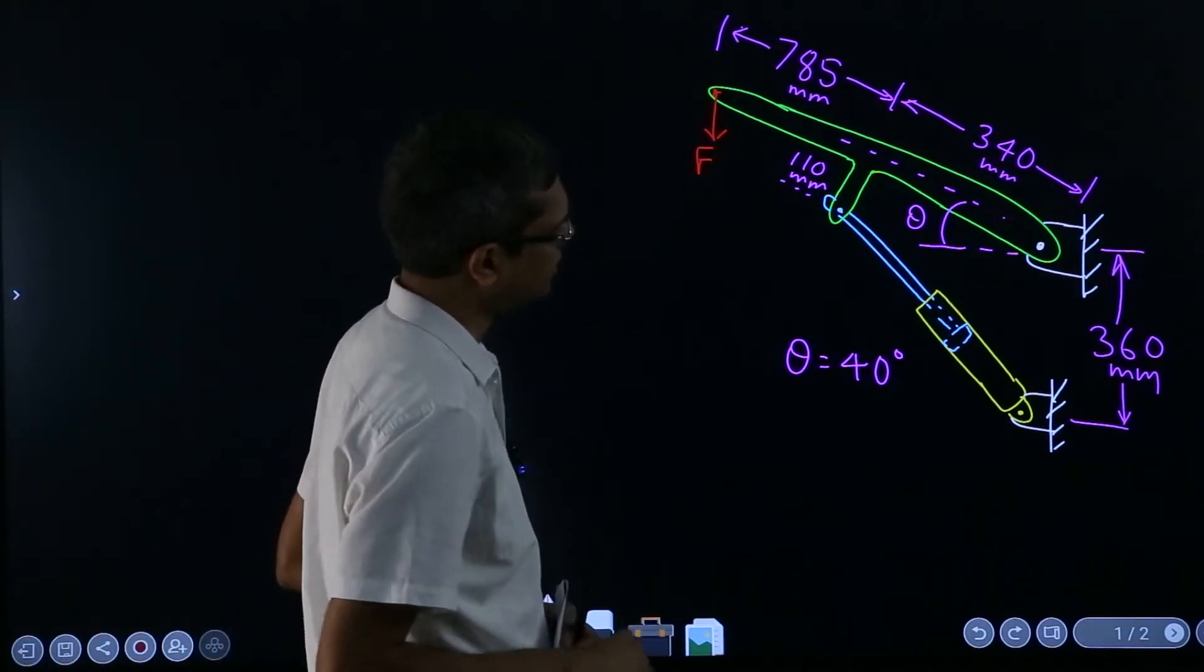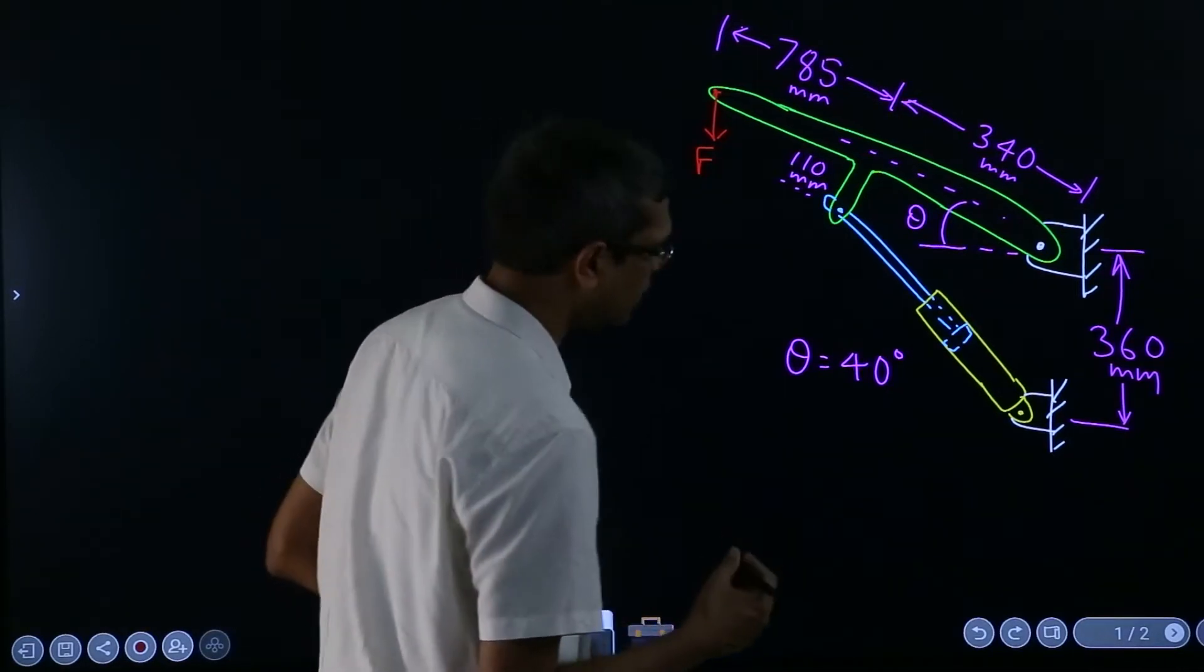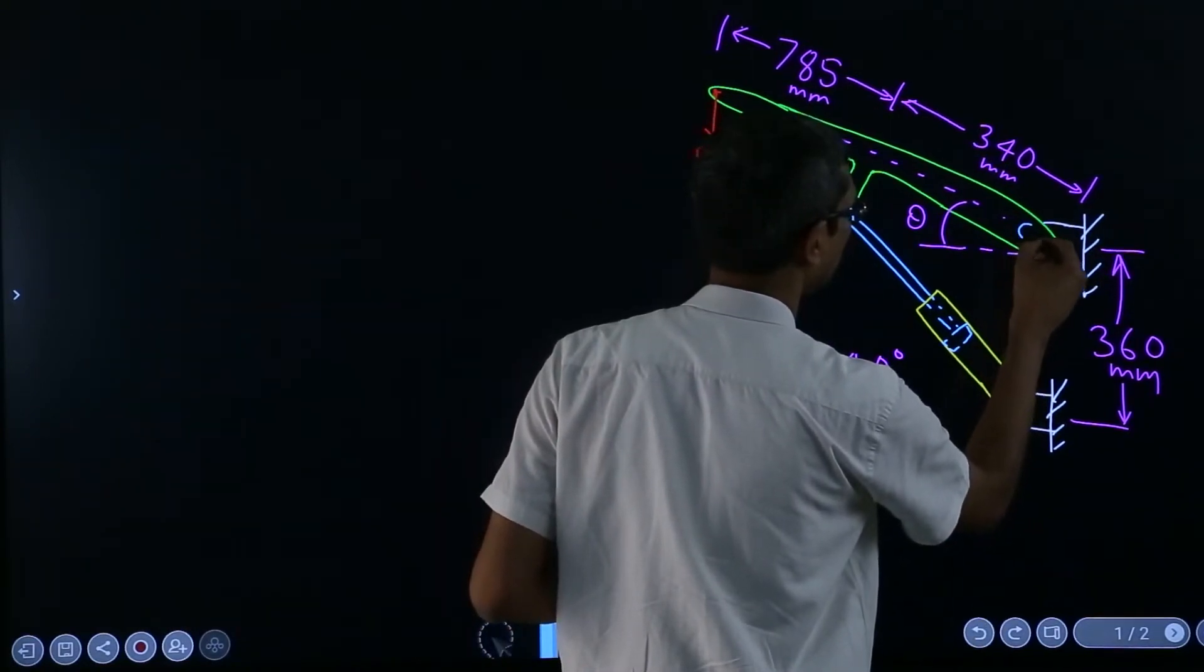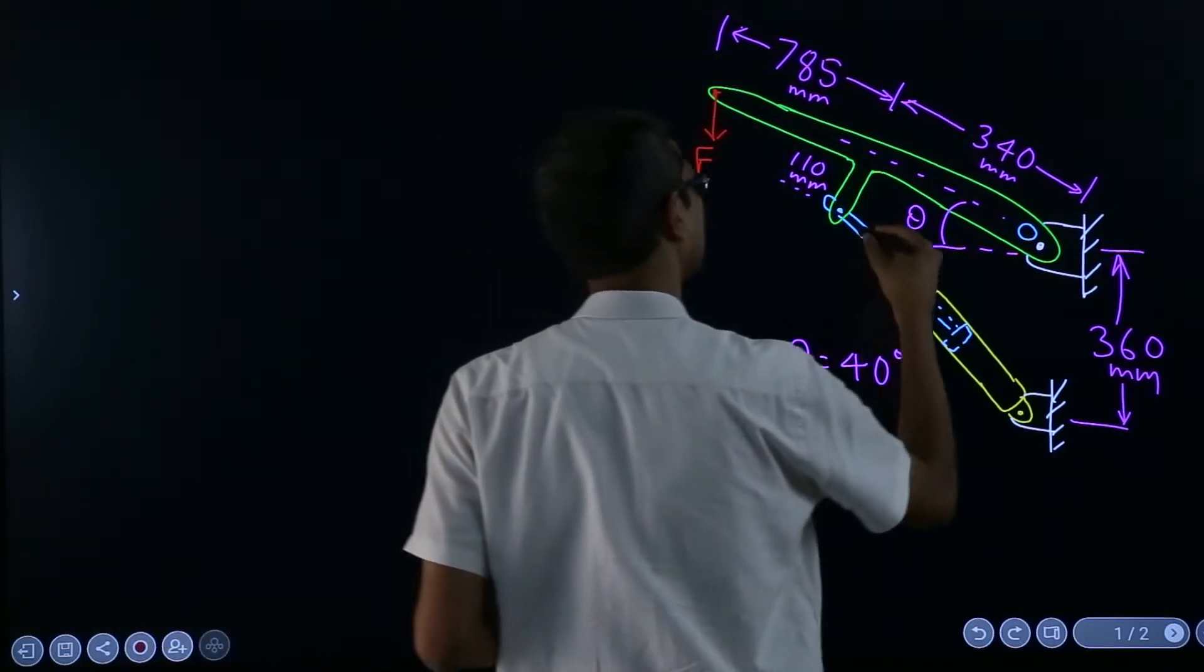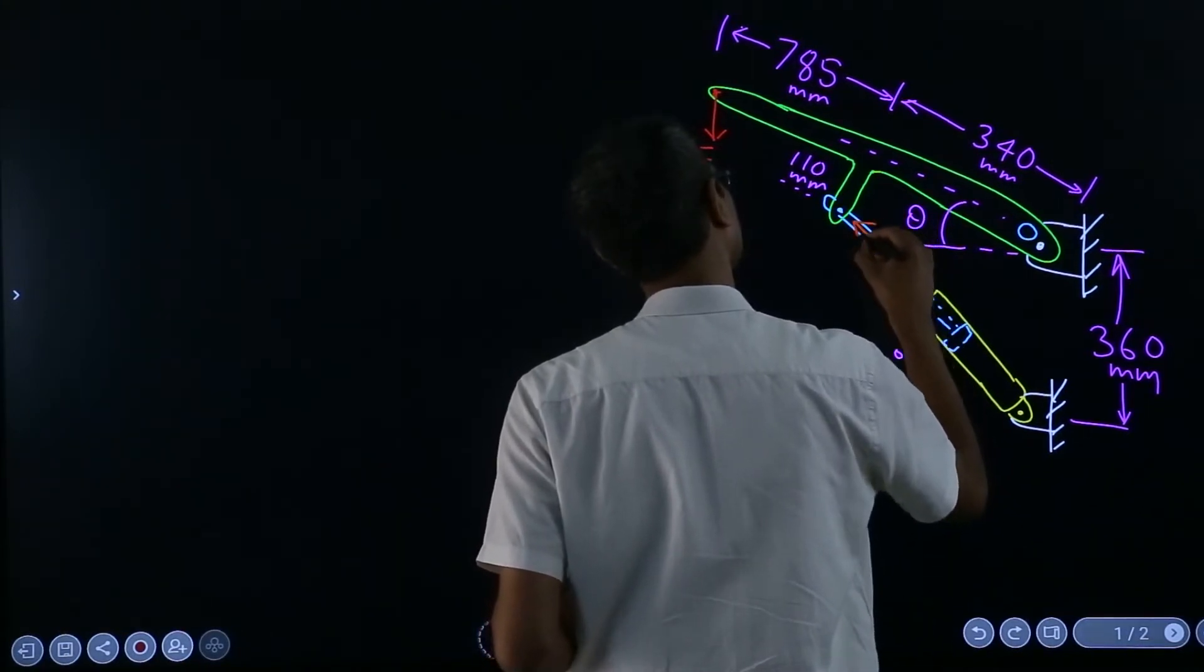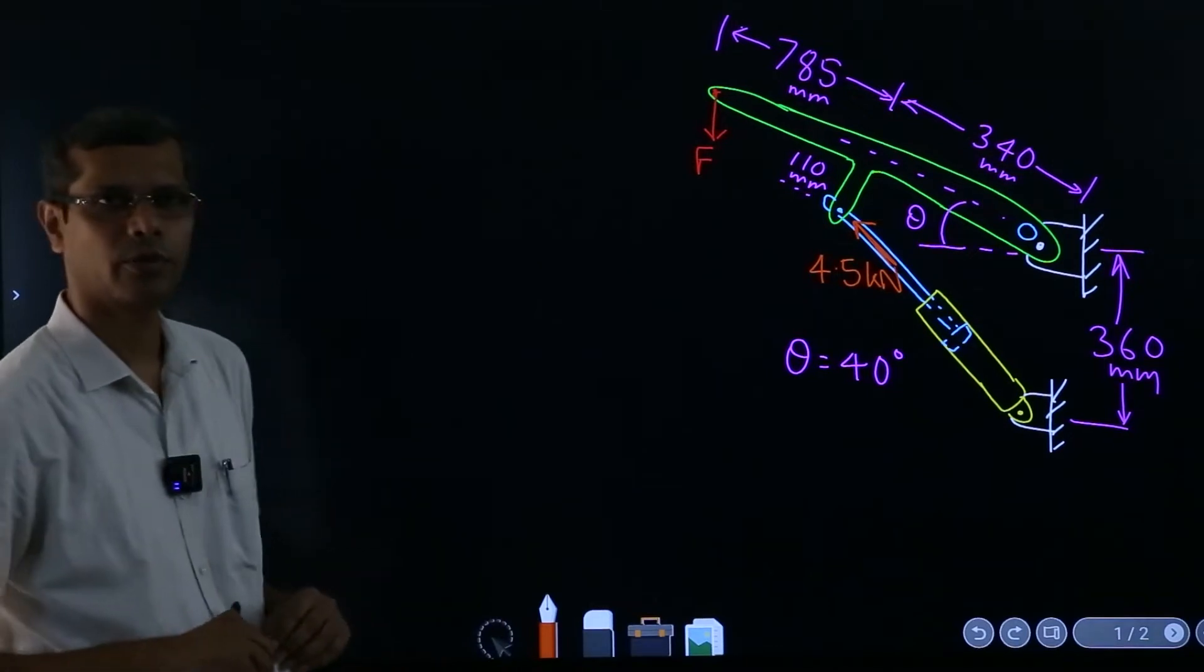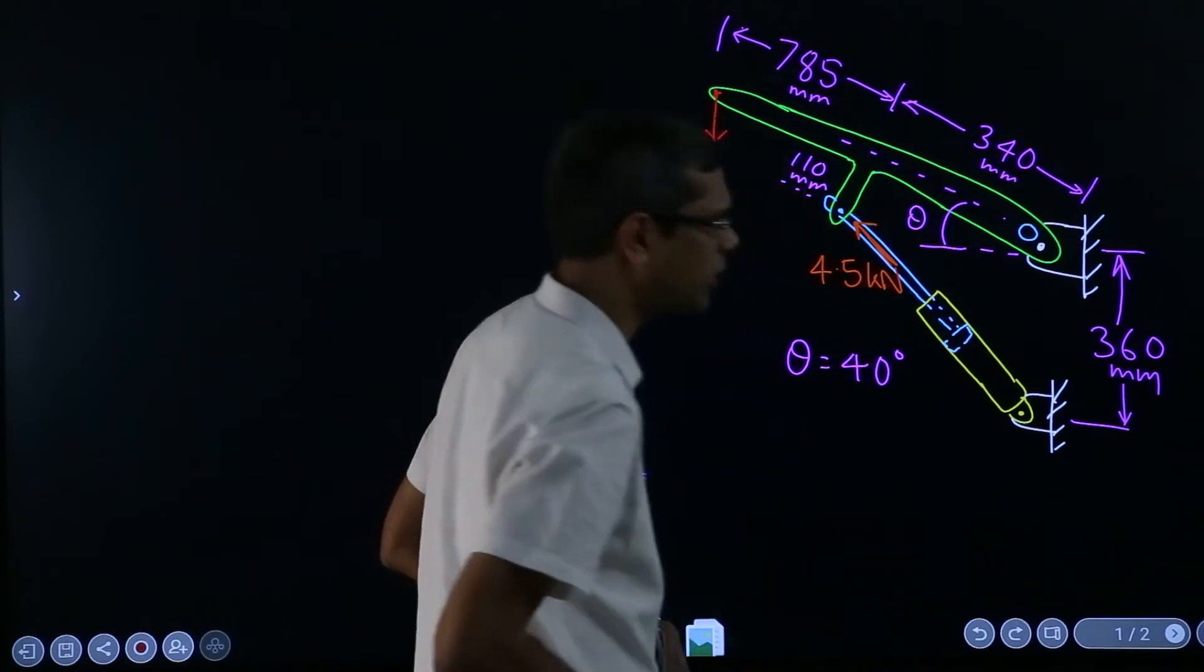Now if that is the situation, then we are supposed to find out the moment about this point, I think it is given as O. It is also known that the force which is coming here is 4.5 kilonewtons, so that is the force which is coming from the piston. We have to find out the moment of this force about this point O.